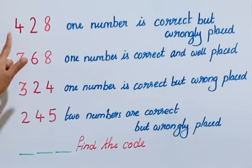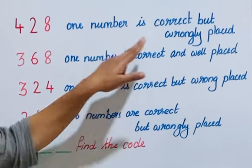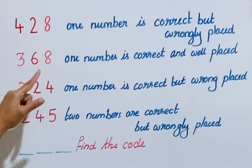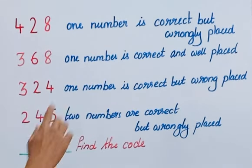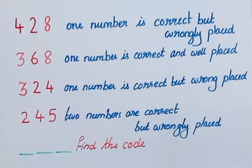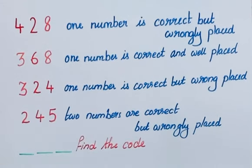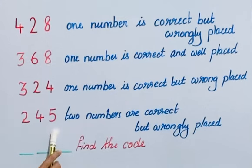1st clue: 428 — one number is correct but wrongly placed. 2nd clue: 368 — one number is correct and well placed. 3rd clue: 324 — one number is correct but wrongly placed. And the last clue: 245 — two numbers are correct but wrongly placed.